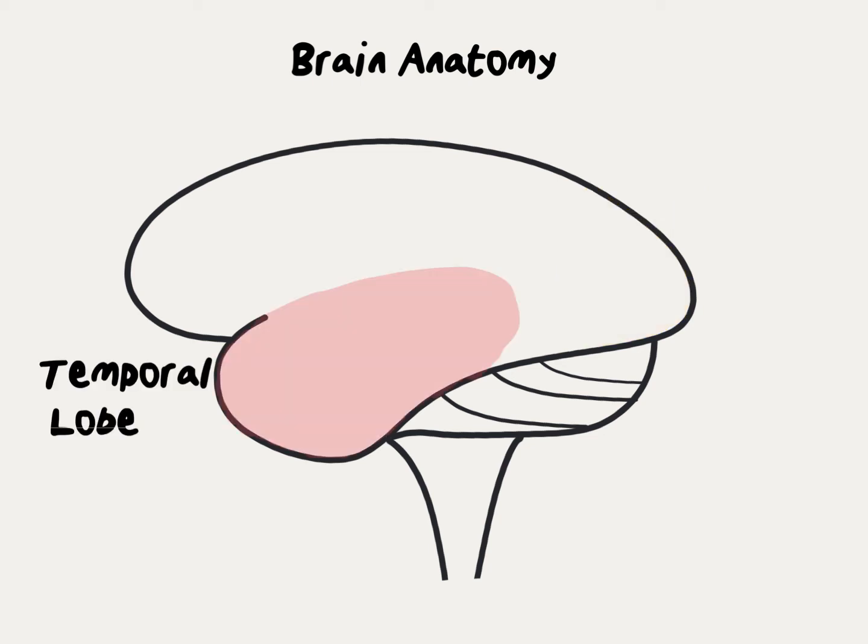The temporal lobe is just where you would think it is, sitting just behind the temple and the ear. It is mostly responsible for speech processing and memory. Patients with an injury in this area can experience garbled speech or word finding difficulty, as well as problems with memory.